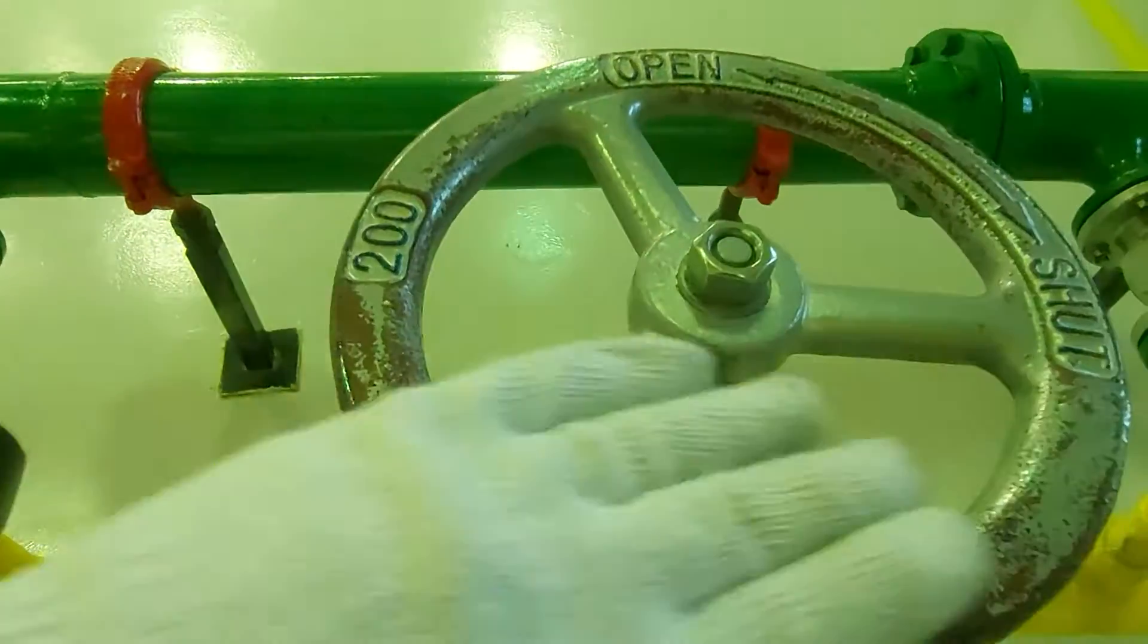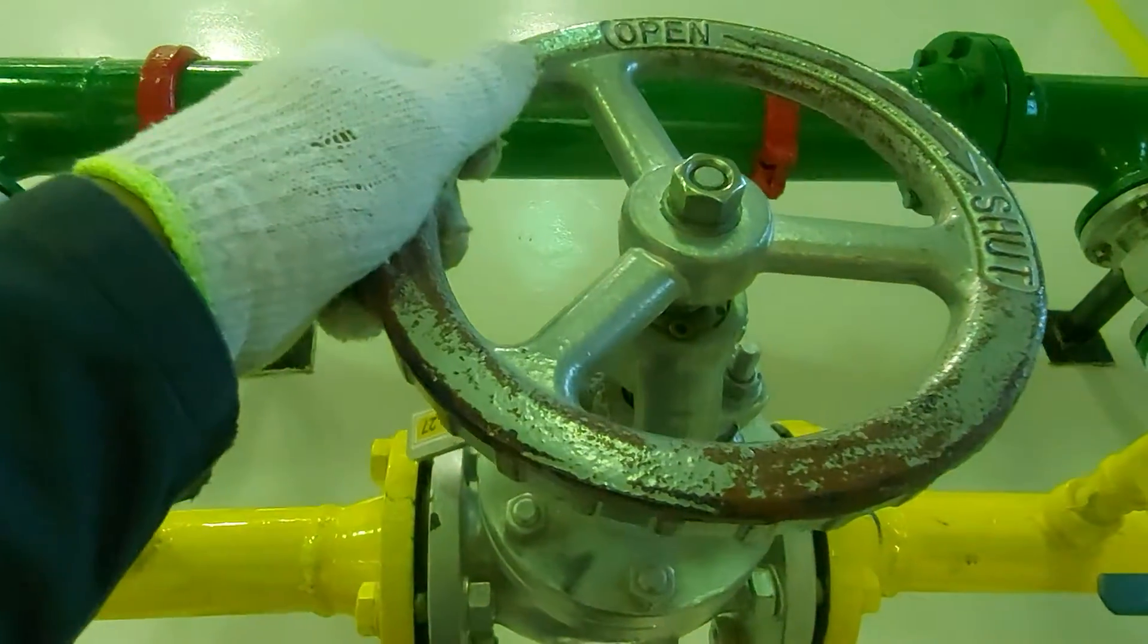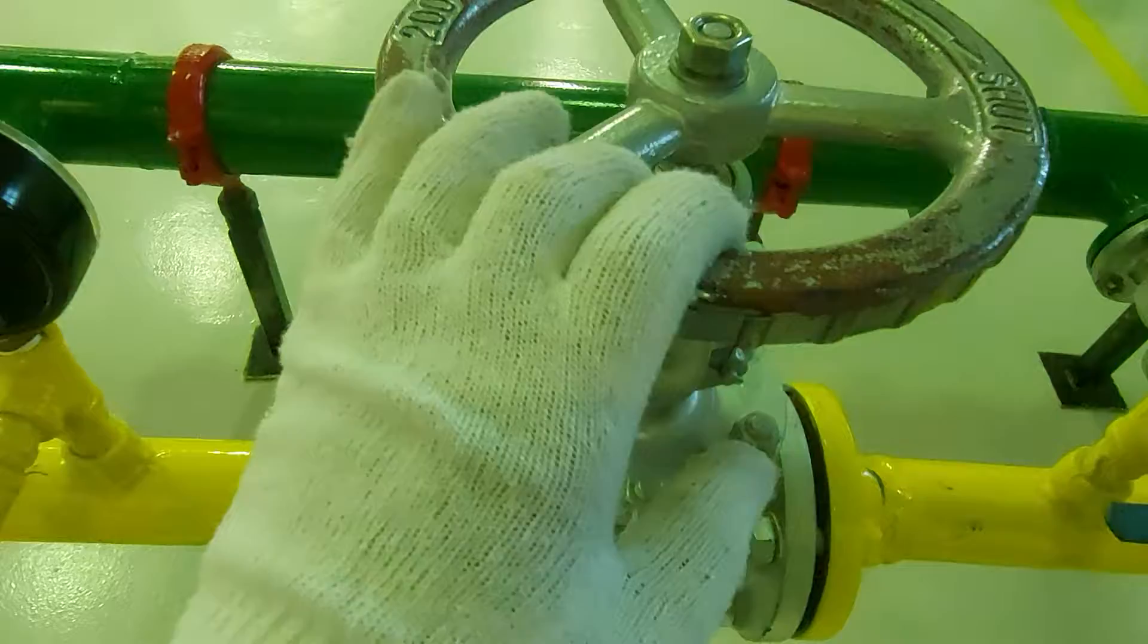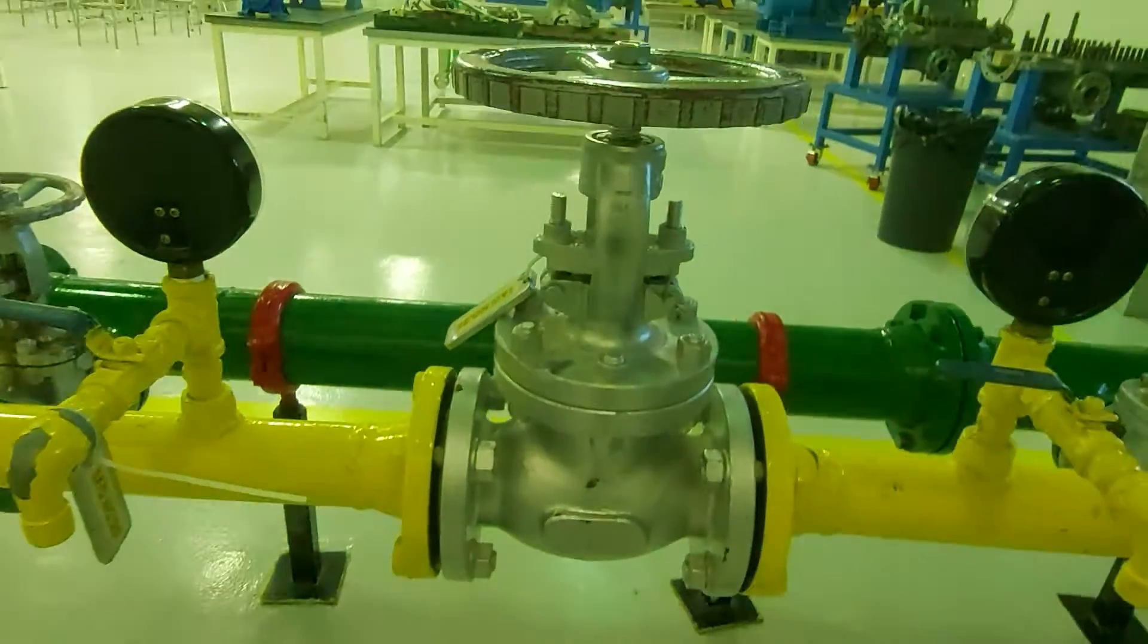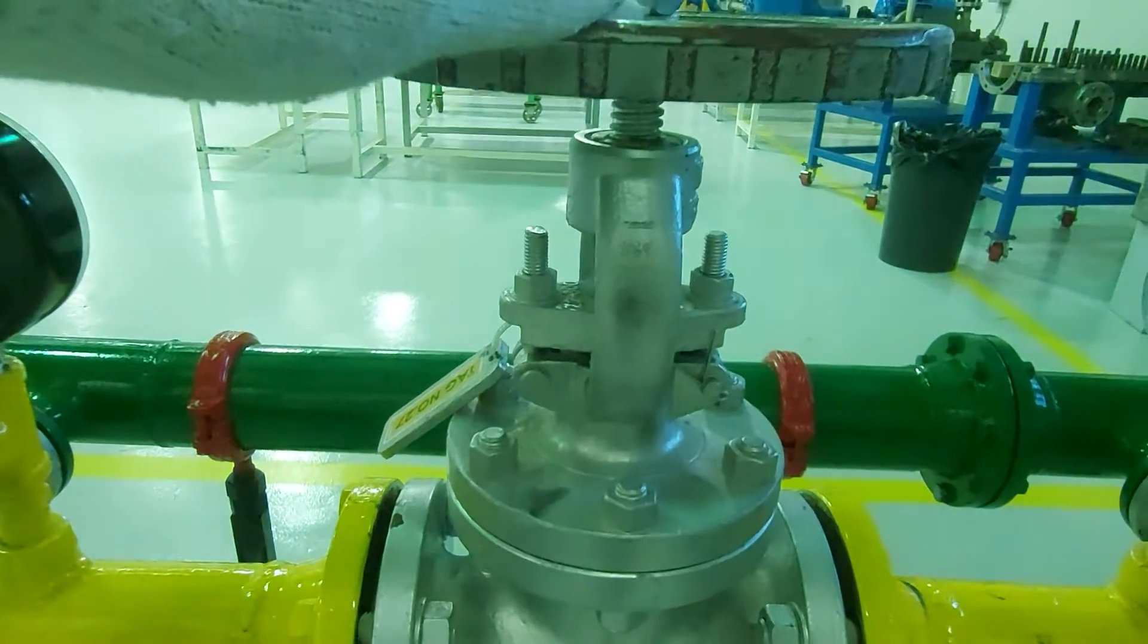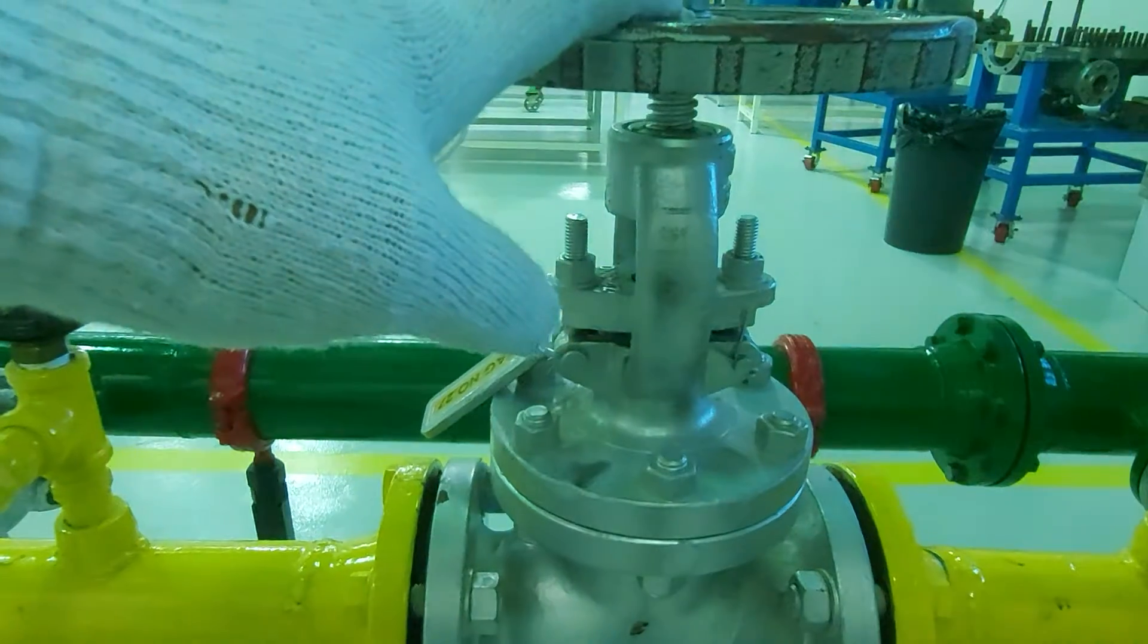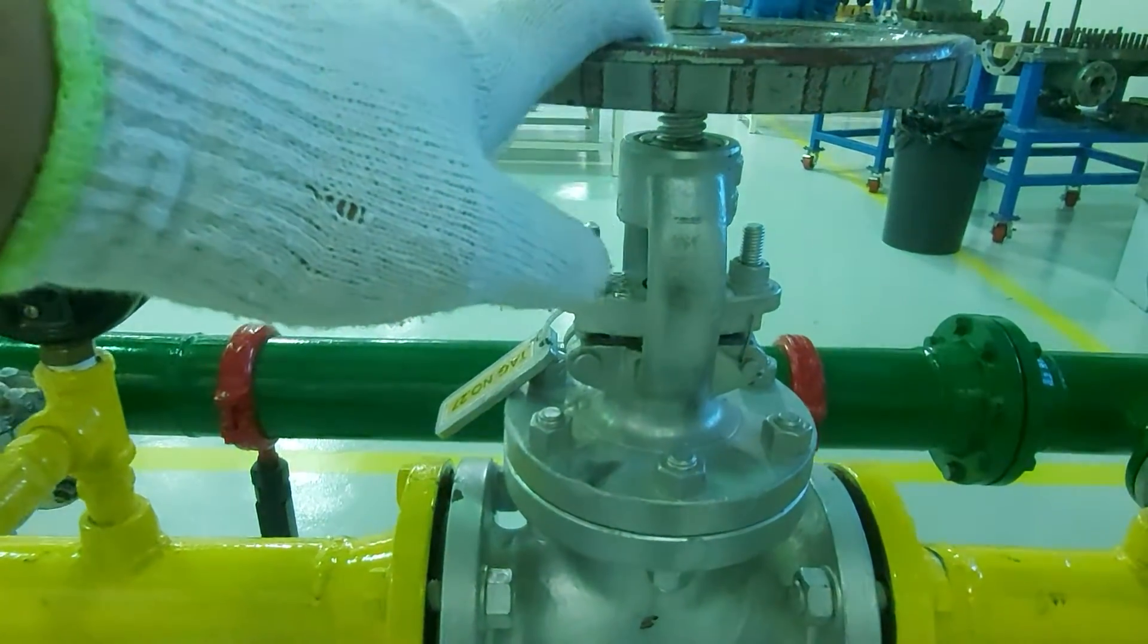Now, how to know from far away that it is open or closed? You have to see the stem. If you see the stem, you will know that it is open or closed. Now we don't see the stem, so it is closed. Let me open it for you and you will see how the stem will be visible.